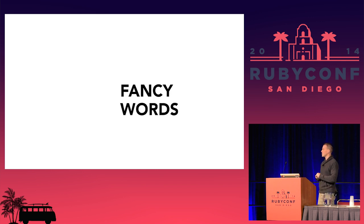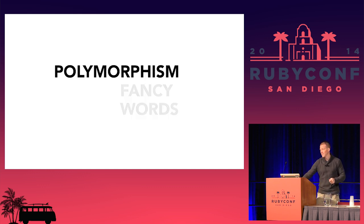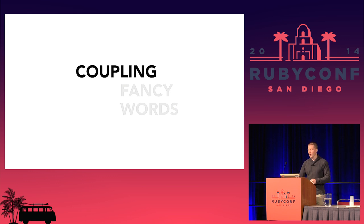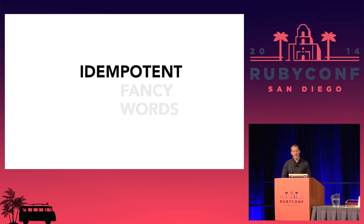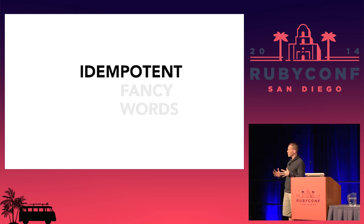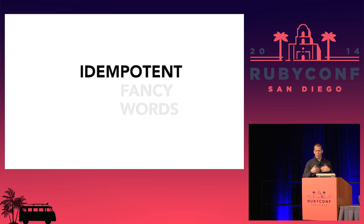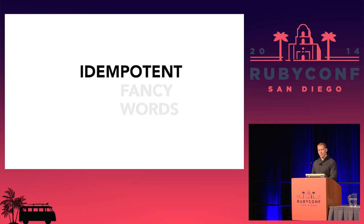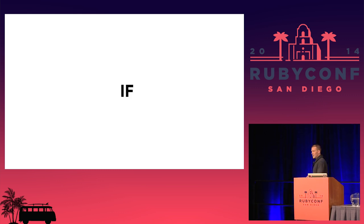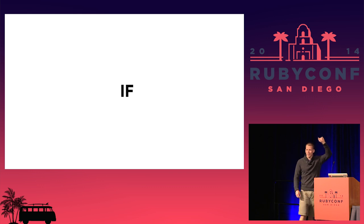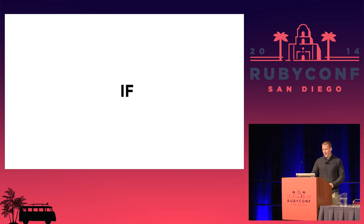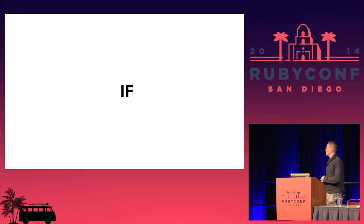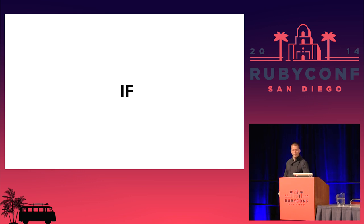One of the great things about programming is that we get to use fancy words — like polymorphism, encapsulation, and coupling, which has nothing to do with Valentine's Day. Idempotent. These concepts matter, but sometimes it's really difficult to see them or know how they work in our code. We also get to use some not-so-fancy words — the simplest and most powerful word we have. We can do amazing things with it.